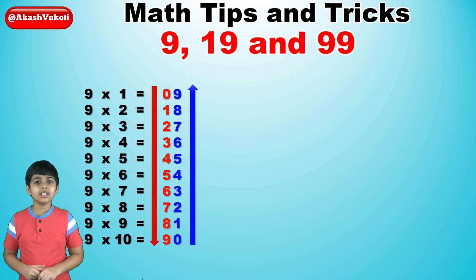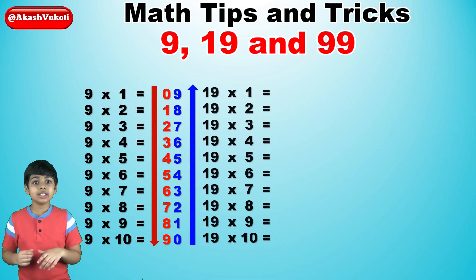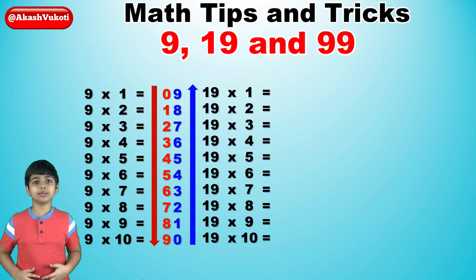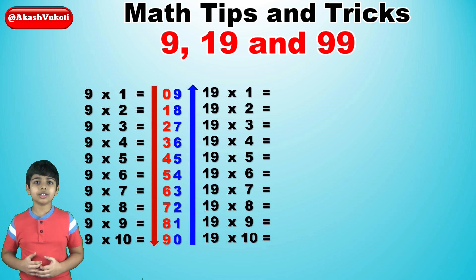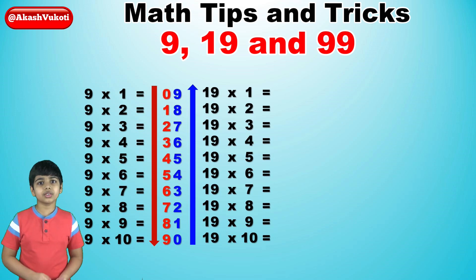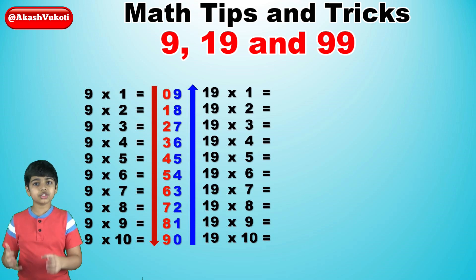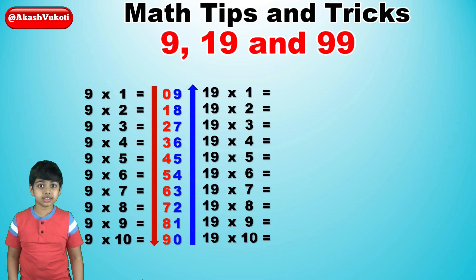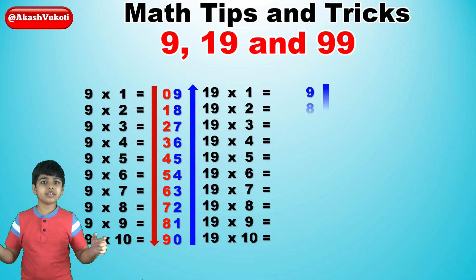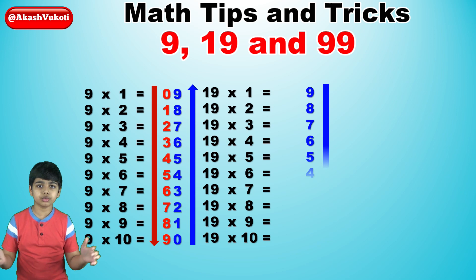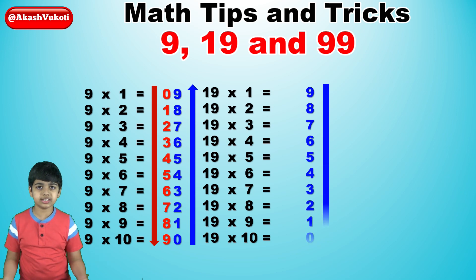Now, the 19x table is very similar to the 9x table trick. All you have to do is, for the rightmost digit, it's the exact same — 0 to 9 backwards. Which means 9, 8, 7, 6, 5, 4, 3, 2, 1, 0, all the way down.